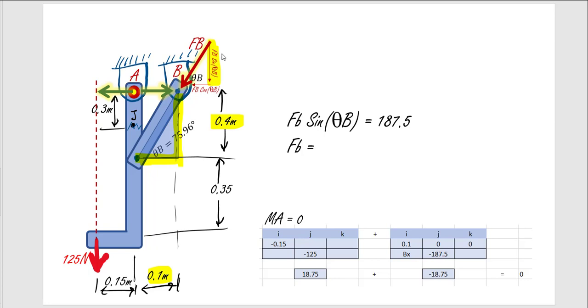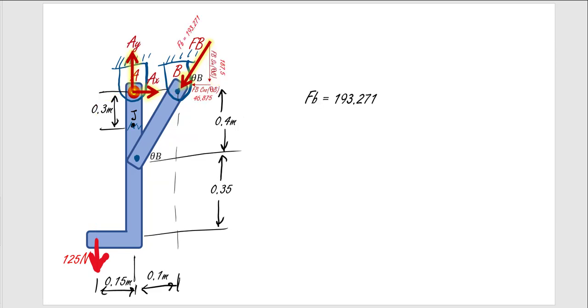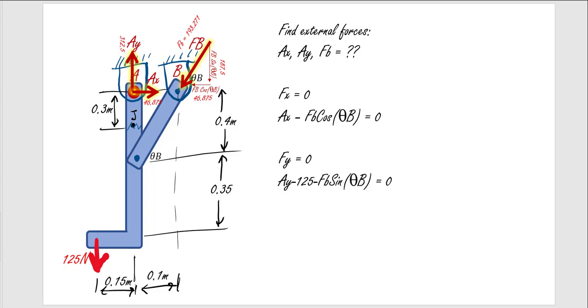And if we have the Y component of B, then we can figure out what the entire force at B is. So there's our force at B is 193. And we can go ahead and walk around the rest of that support. So remember, in the X direction, we had these guys equal and opposite. So AX is positive 46 if BX is negative 46.